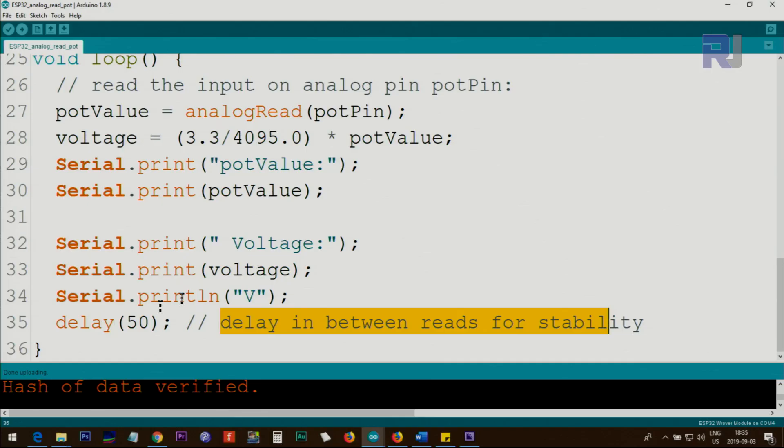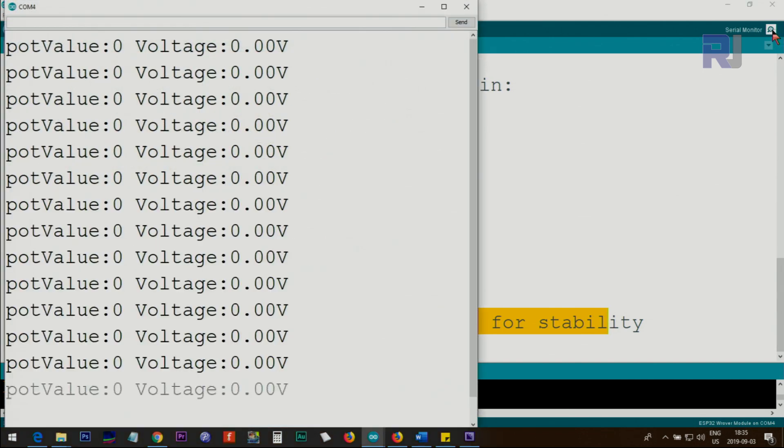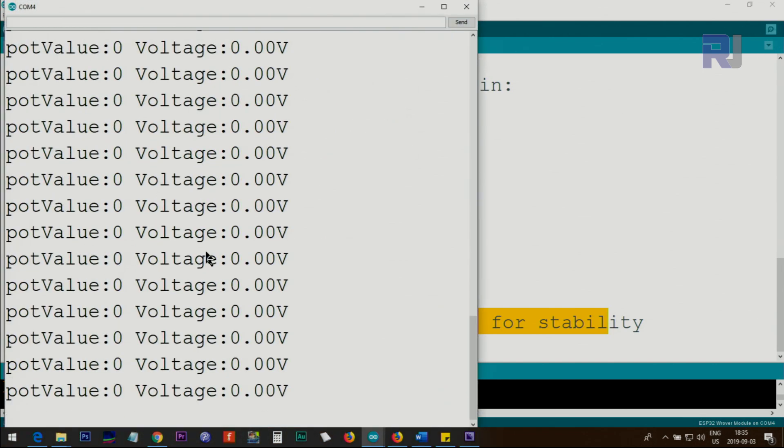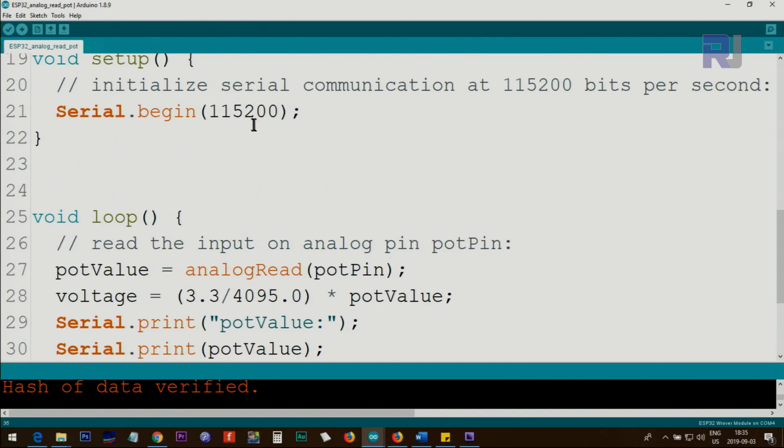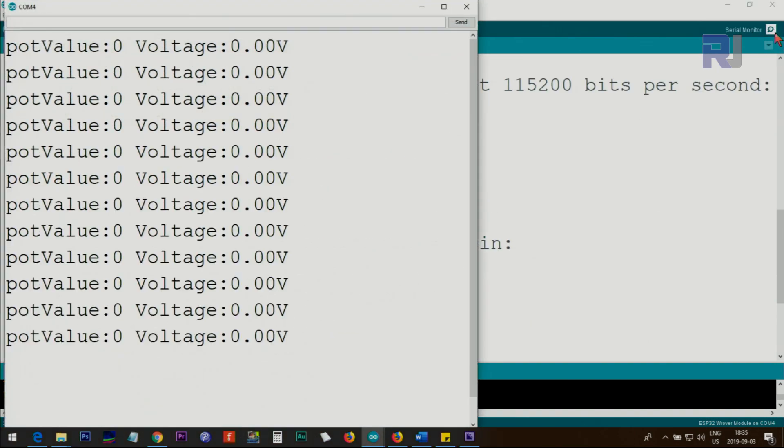Now let me demonstrate. First I'm opening the serial monitor by clicking here. As you can see it shows potValue and voltage value zero. If I expand the screen on the right side lower corner you see 115200. This number must match the number that you have set here, otherwise you will not be able to see the value.